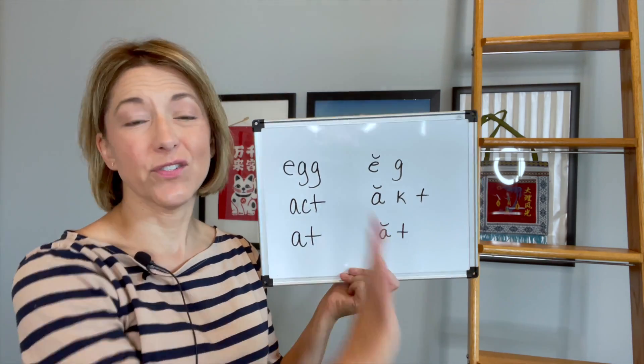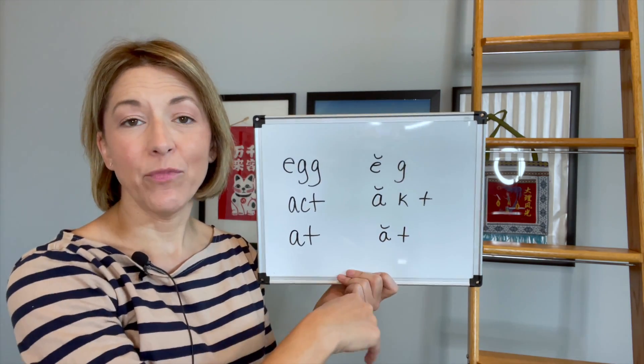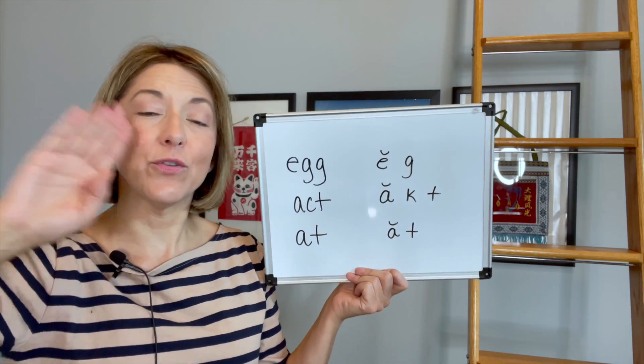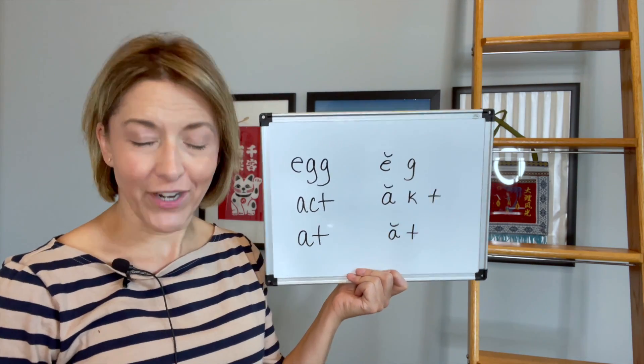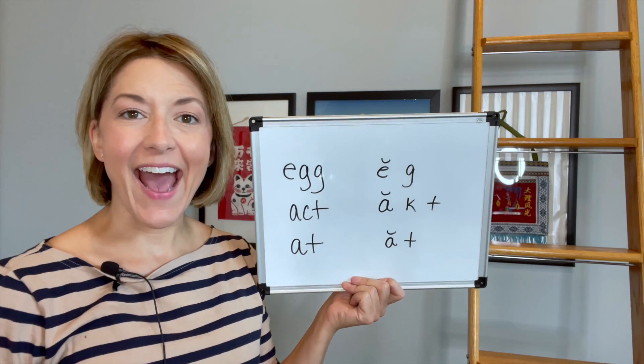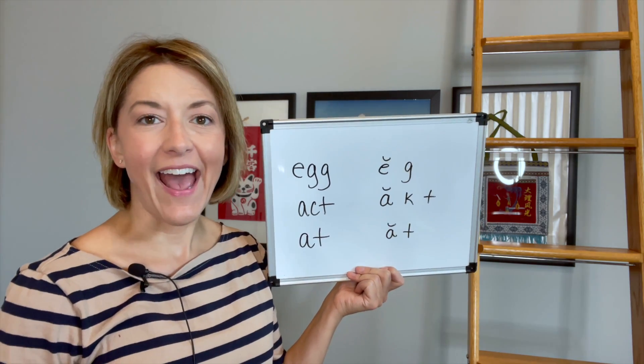Now for at, just going to take that k out and move from low for the a to behind the top front teeth for the t. At, at, at.